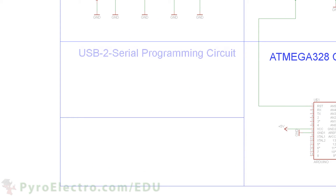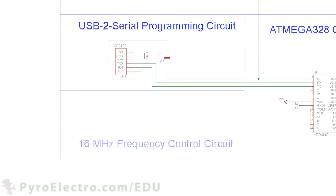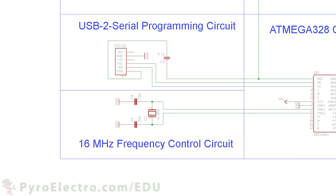To program the microcontroller, we'll use a USB to serial converter. Later on, we will also use this converter to send commands to the microcontroller from a laptop. Next, we create the 16 MHz frequency control circuit using a crystal and two 22 picofarad capacitors.